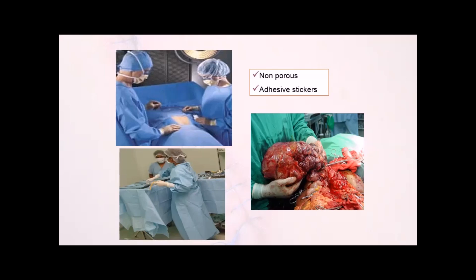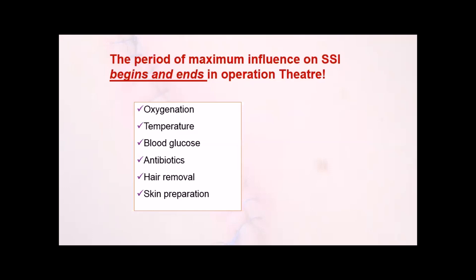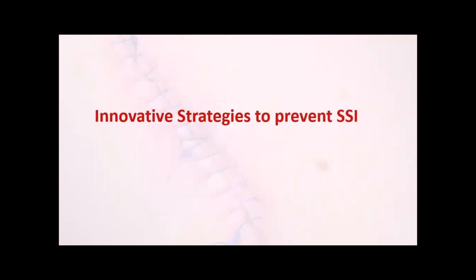Perioperative oxygen supplementation has some evidence to show it improves tissue oxygenation and prevents SSI. Regarding draping, the previous problem with cloth gowns and patient drapes was two-way contamination; most hospitals have now switched to water-repellent gowns and patient drapes. Adhesive non-porous stickers are the best to further prevent SSI. Most prevention measures begin and end in the operation theater, where the surgeon has a great role — whether it is temperature, blood glucose, antibiotics, hair removal, or skin preparation, all must be attended to in detail.